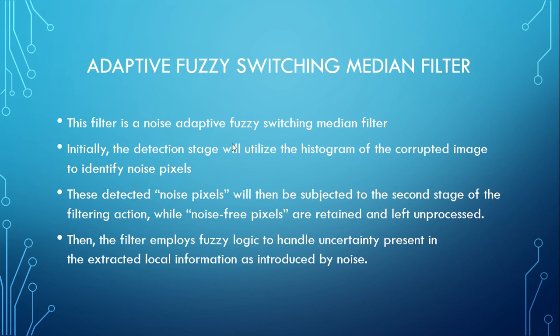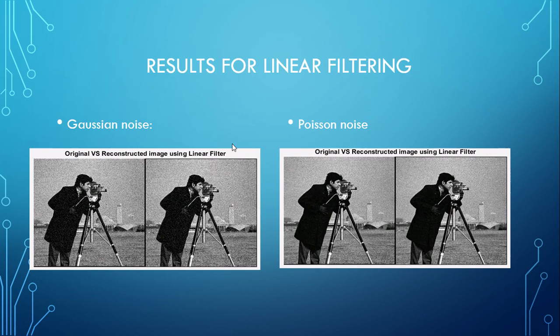The last filter covered is the Adaptive Fuzzy Switching Median filter, also called the Noise Adaptive Fuzzy Switching Median filter. Initially, the detection stage utilizes the histogram of the corrupted image to identify noise pixels. These detected noise pixels are then subjected to a second stage of filtering while noise-free pixels are retained and left unprocessed. The filter employs fuzzy logic to handle uncertainty present in the extracted local information as introduced by noise.